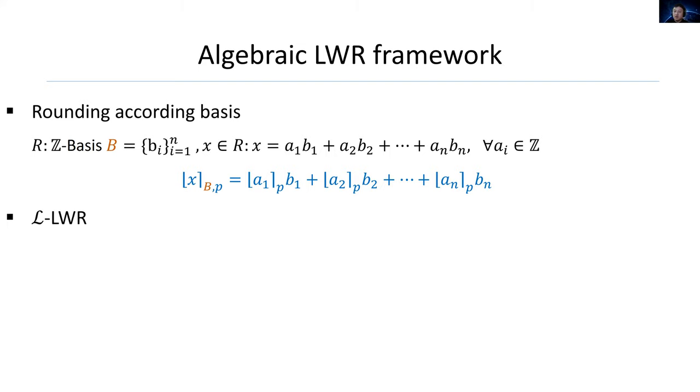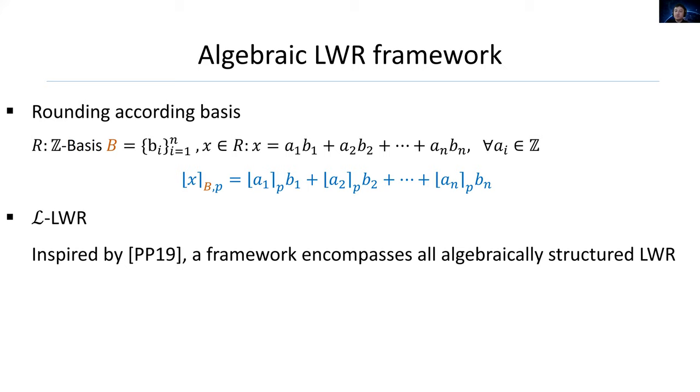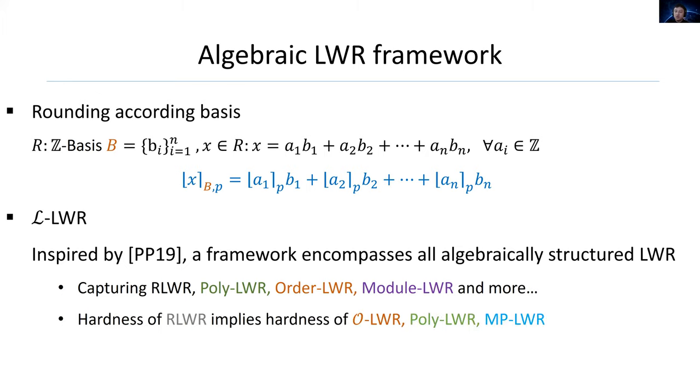Here we propose a new rounding procedure: rounding according to basis. We know that any ring of integers R has at least one Z-basis B. Then an element X in R can be interpreted as the integral combination of the basis B, and the rounding of it is with respect to the coefficients corresponding to B. Let's go a further step to define a new framework which is called Lattice LWR. This framework is inspired by the work of Peikert and Pepin in 2019, and it encompasses all algebraically structured LWR such as ring LWR, poly-order module LWR, and more.